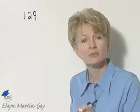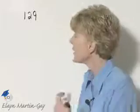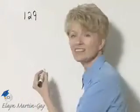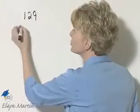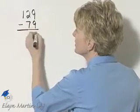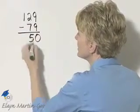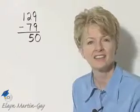A check is written for $79. Since a check is written for $79, that will decrease the amount in the checking account. So we subtract $79 and then he has $50 in his account.